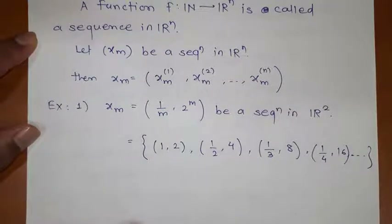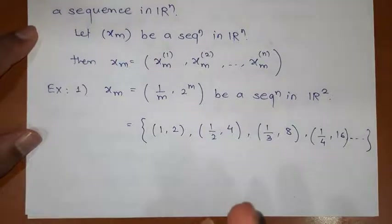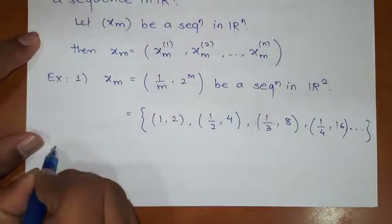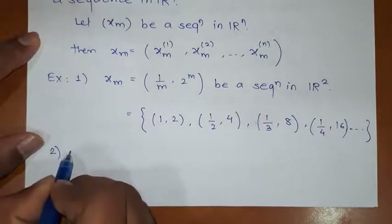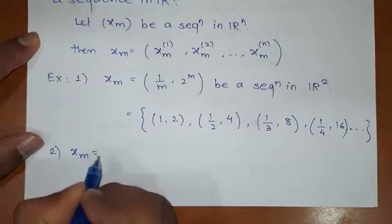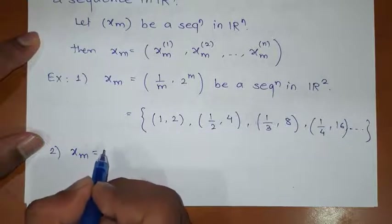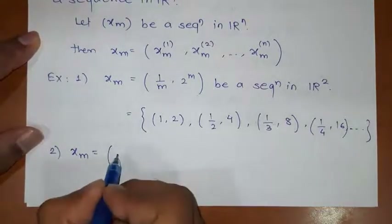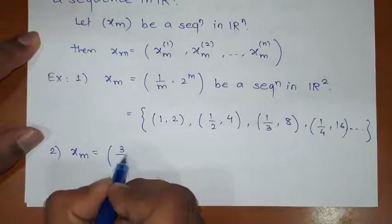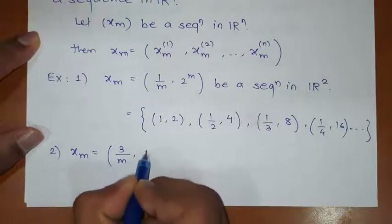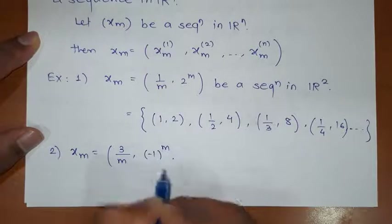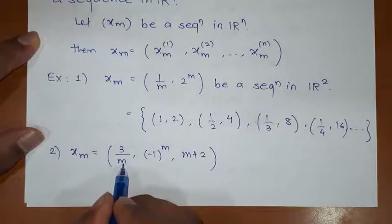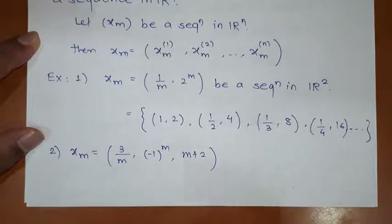All of you understood sequence in R2, R3 — in this way we can say sequence in Rn. Let us discuss one more example. I am considering xm as a sequence in R3. So it is (3/m, (-1)^m, m+2). See how many components are there: 1, 2, 3. So this is the sequence in R3.